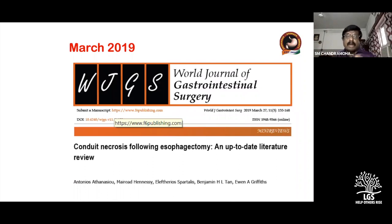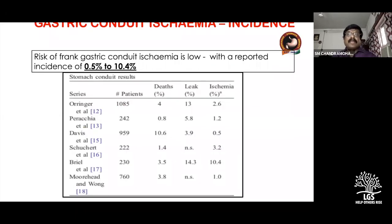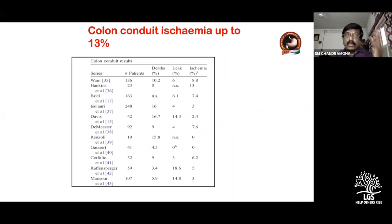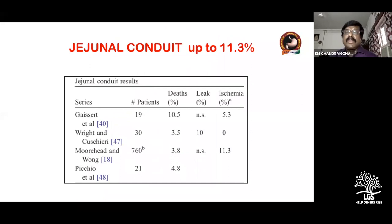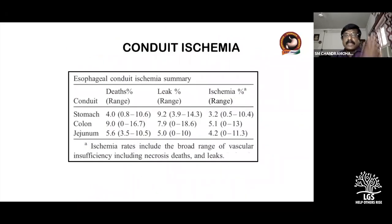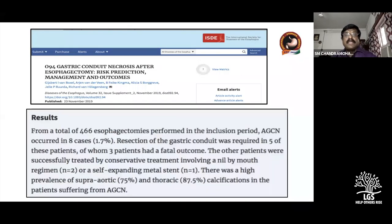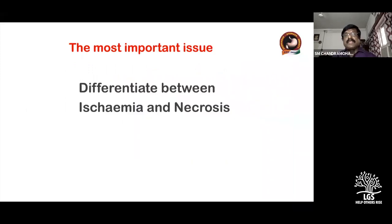One reference published last March on conduit necrosis following esophagectomy shows the incidence of necrosis can go up to 50% in some studies. The ischemia rate in gastric conduit goes up to 10.4%, in colon up to 13%, and in jejunum up to 11.3%. We have also published our own study two years back on how to manage this ischemia.